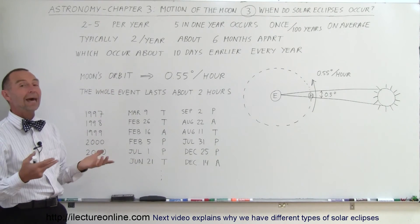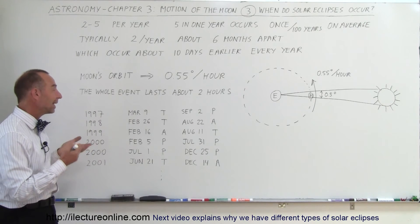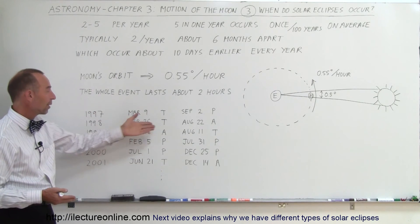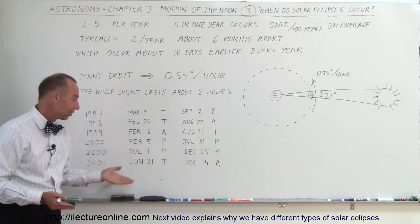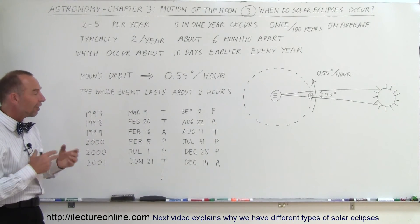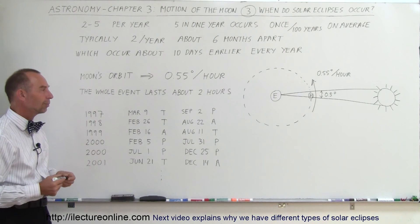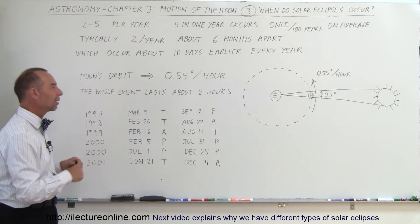So there seems to be that regular pattern, and you can see that it's not at any given time of the year. Sometimes it's March, September, February, August, July, December, June, December. So it varies depending upon the cycle of the Moon and the solar eclipses as they occur at different times of the year.